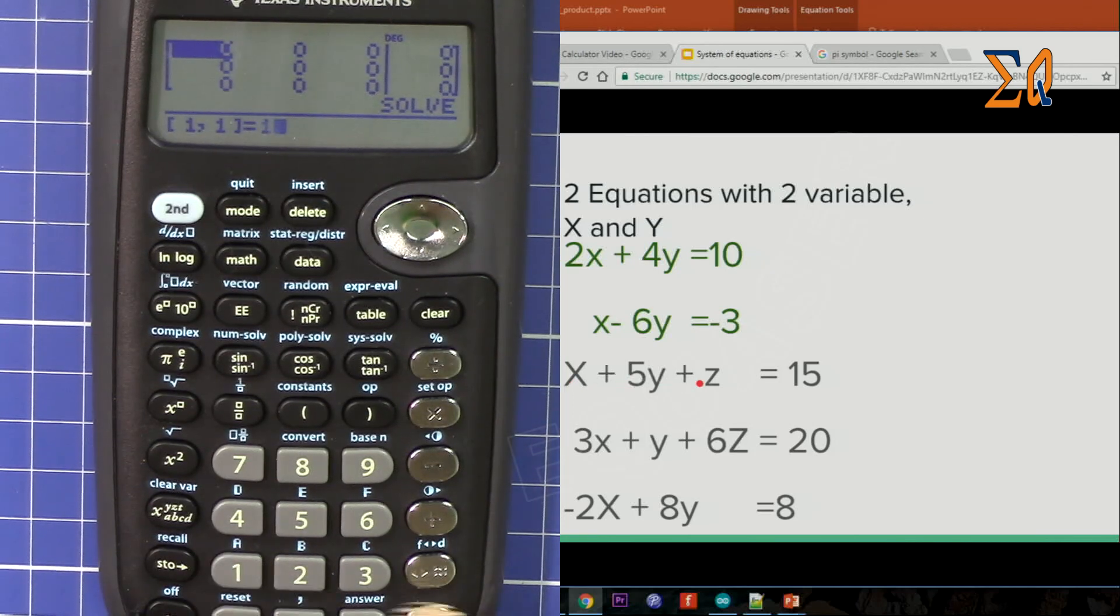So 1, 5, and then 1, and then on this side we have 15.